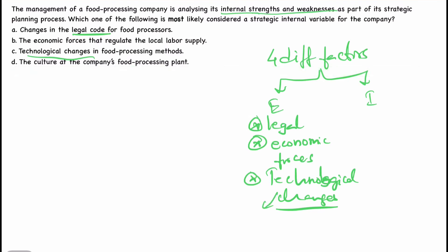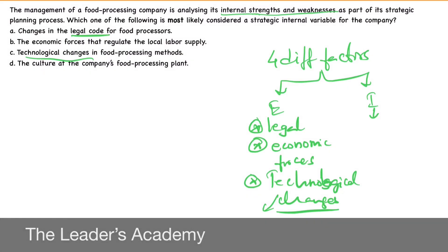And the next one is the internal factor: the culture at the company's food processing plant. At the plant, there will be a culture which has been established by the founders of the company. If there is a need for change, they can make it. If that culture is a strength or if there are weaknesses in it, they can bring the difference. That's why the culture at the company's food processing plant is within their control — it will be an internal strength or an internal weakness. In this context, option D is the right answer.